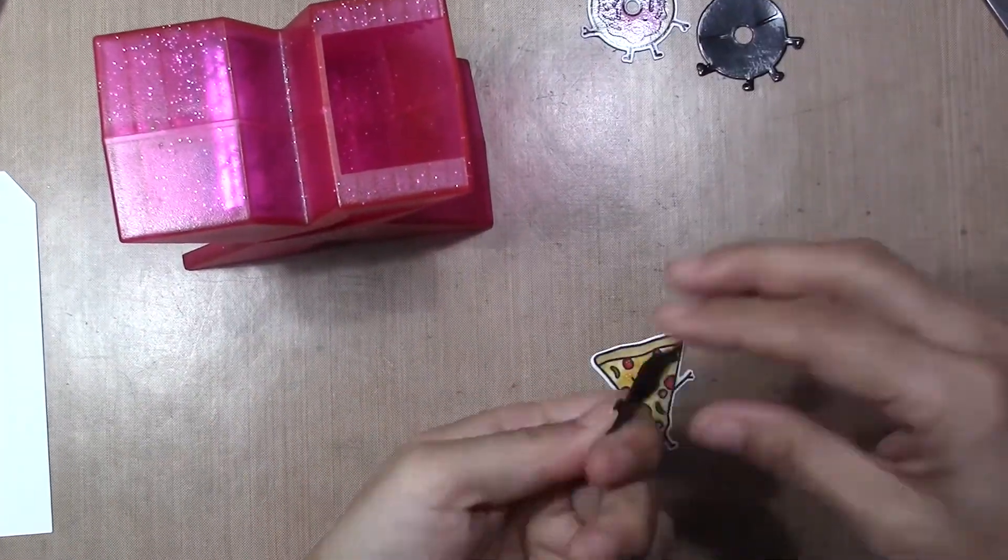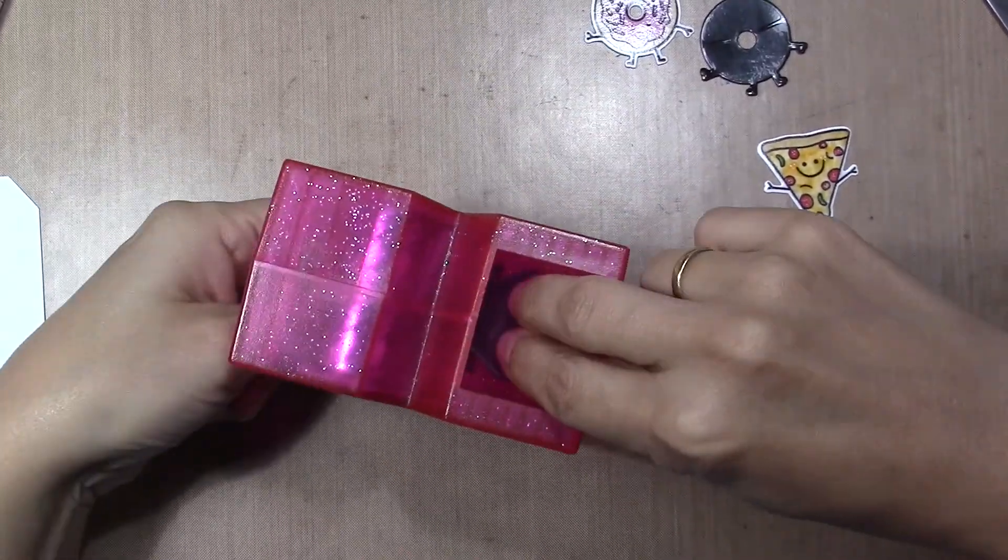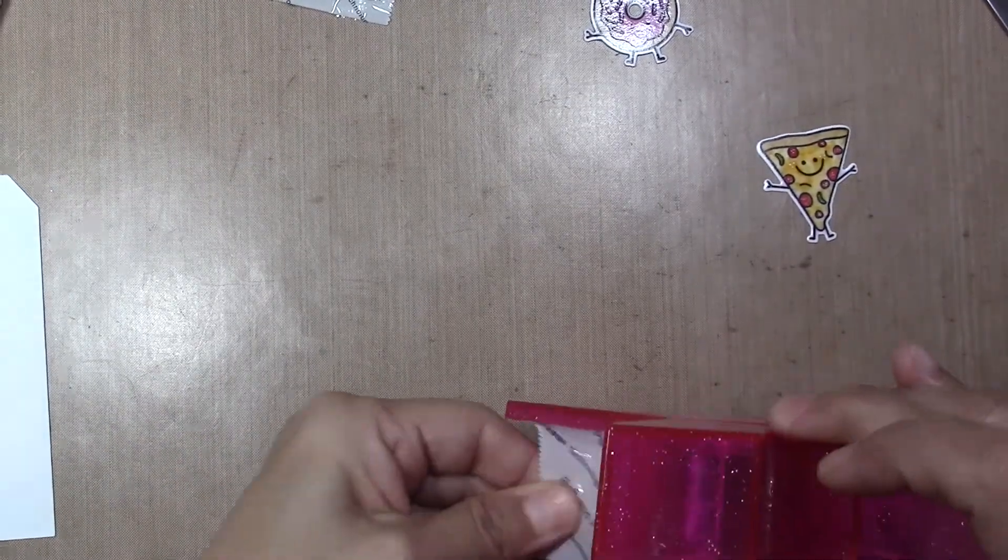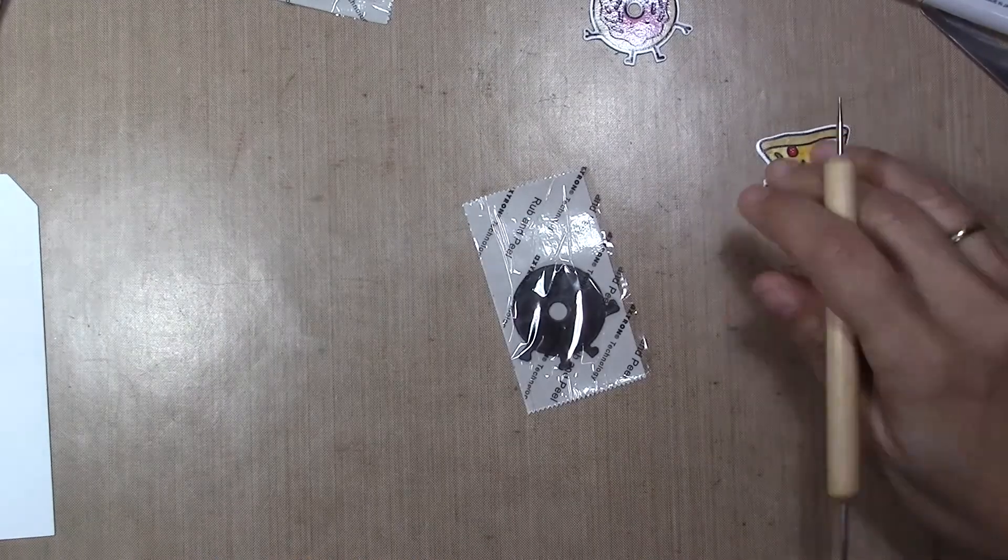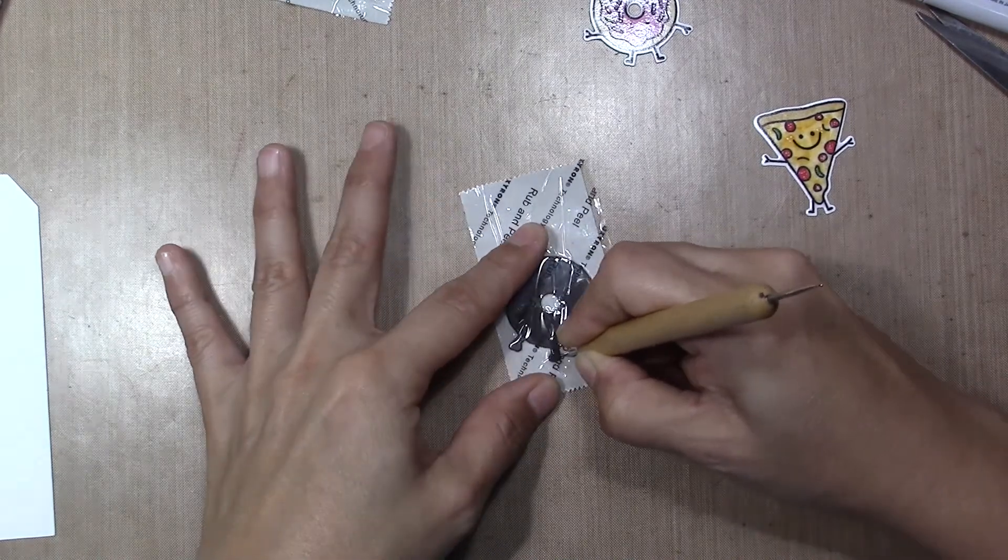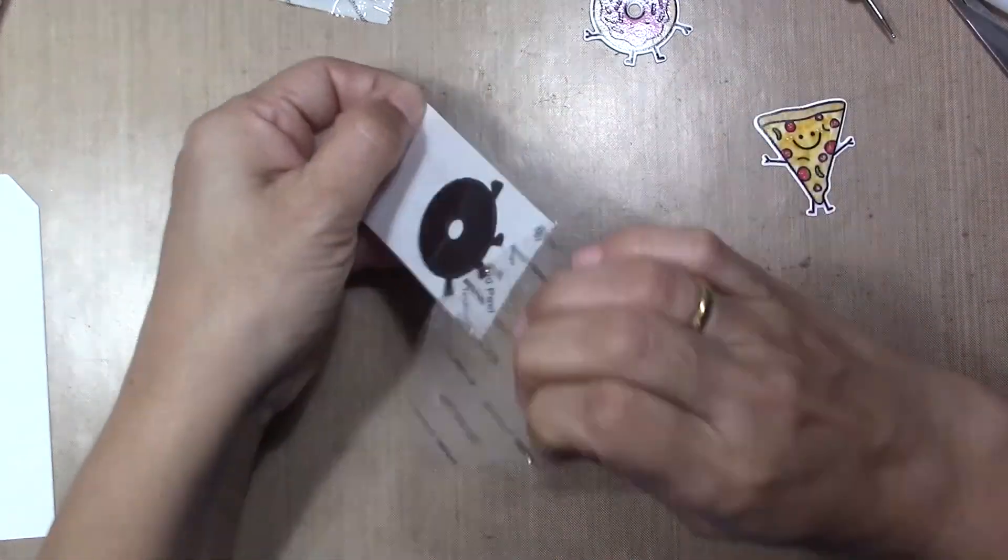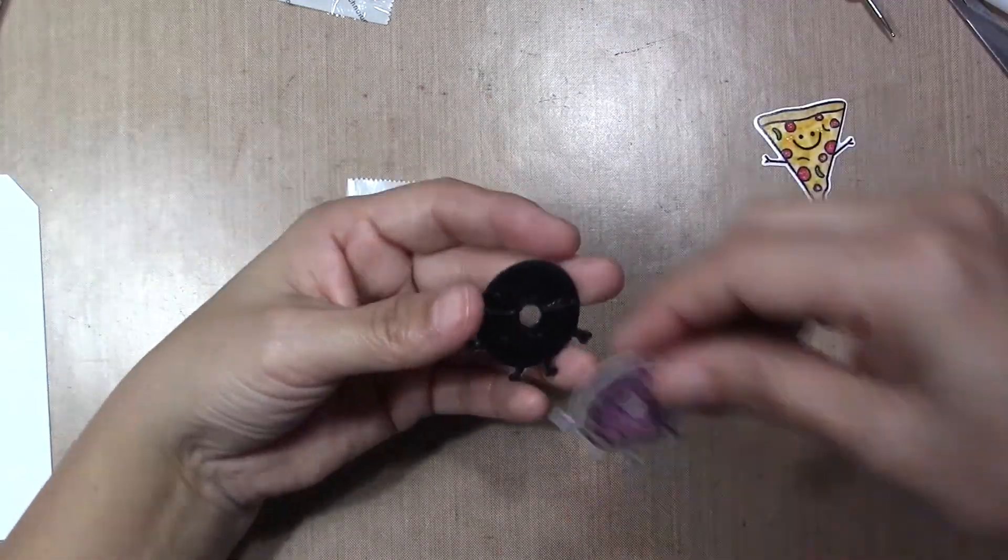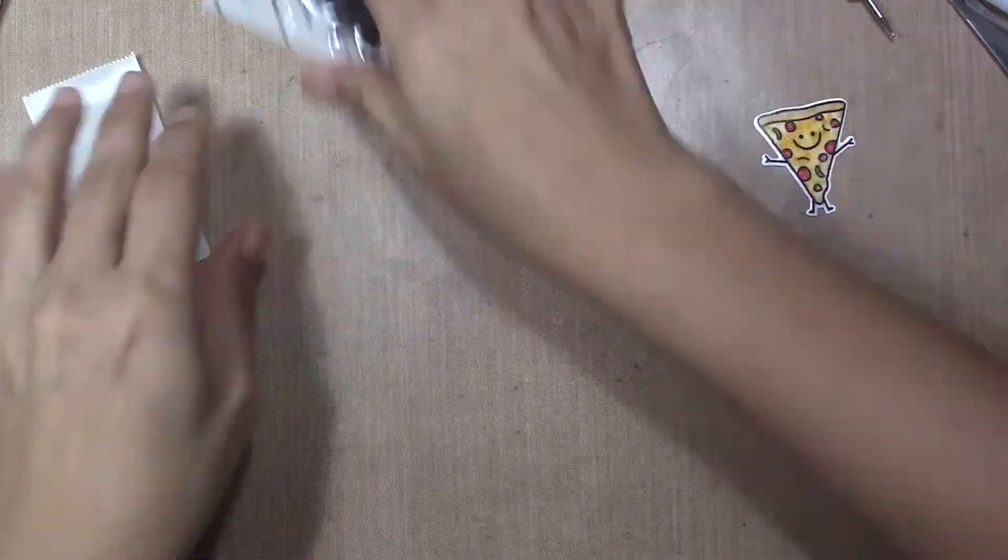Now I'm going to cut the magnets. I cut it the same way I cut every single image with the die-cut and I pass it through my sticker maker and I'm going to glue my image to the magnet.